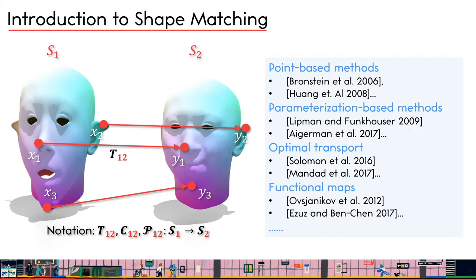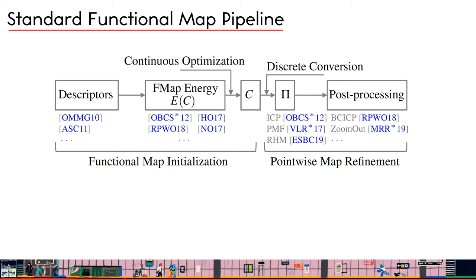Existing methods for shape matching can be roughly categorized into four groups, including point-based methods, parameterization-based methods, and methods using optimal transport formulation. Our work uses functional map representations, which tries to find correspondences between functions defined on the shapes instead of finding correspondences between vertices directly. A standard functional map pipeline can be divided into two main steps: functional map initialization and point-based map refinement.